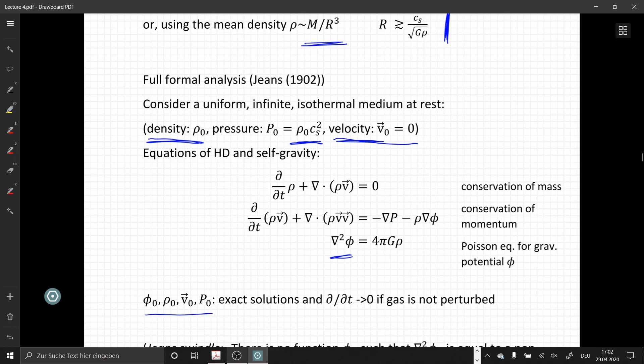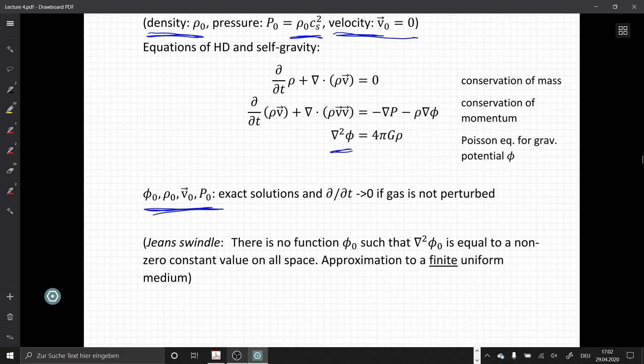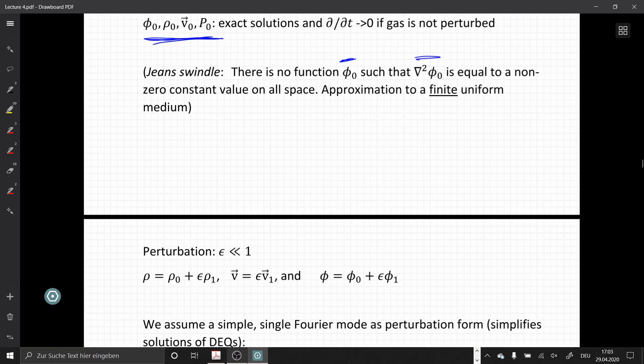The quantities φ₀, ρ₀, V₀, and P₀ are exact solutions of this system of equations. The time derivative is zero because these quantities are all constant if we have no perturbations. But please be aware there is no function φ₀ such that ∇²φ₀ equals a non-zero constant value in all space, because we cannot have an infinite uniform medium. This is just an approximation to a finite uniform medium.